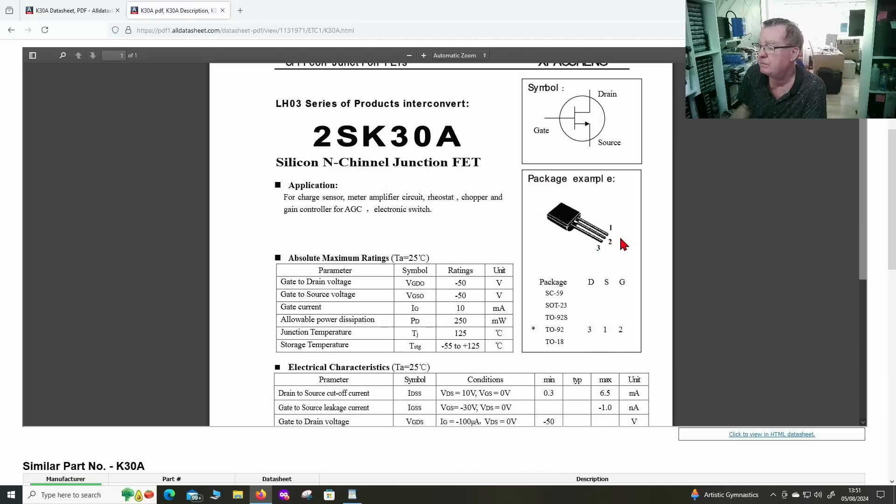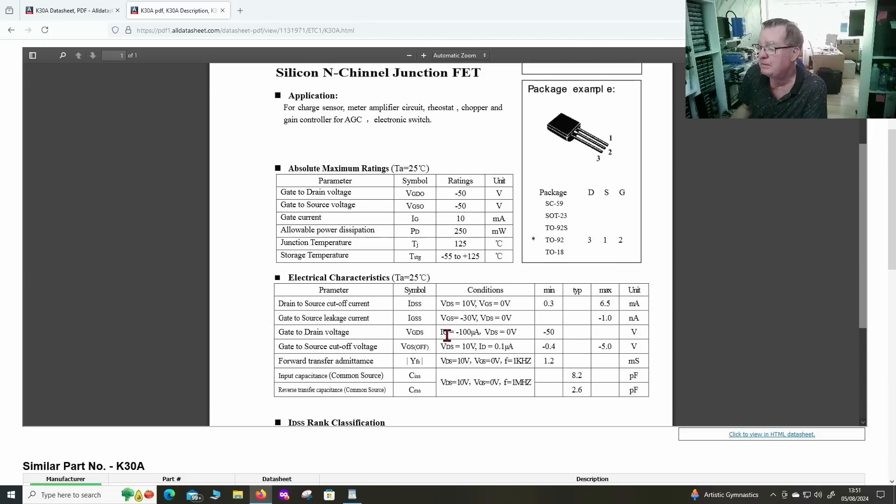Package, drain, source, and gate. So the gate is on the center pin. Some ratings. So this will dissipate 250 milliwatts. It doesn't give us an actual current or such. We have a gate to drain voltage, minus 50. So the maximum gate to drain is minus 50. On the gate, gate to source, minus 50. There's the maximum ratings.